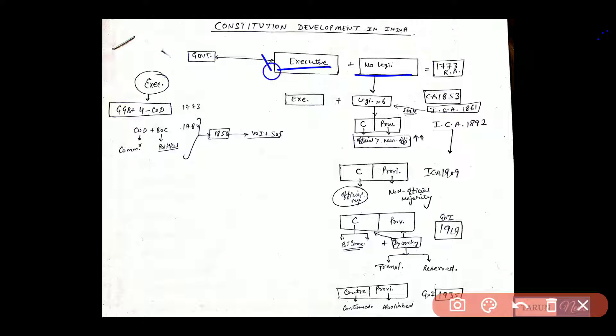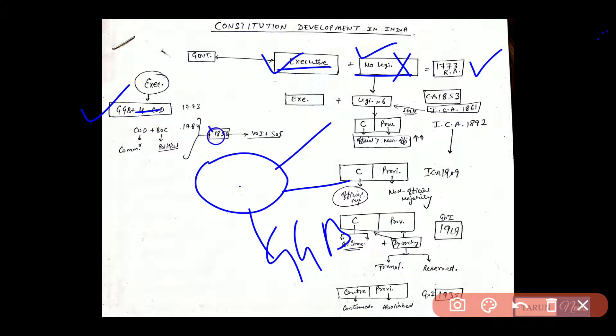The government has two organs: one is the executive and one is the legislature. But when our first Regulating Act was 1773, it was not the legislature, it was just the executive. And who was the executive? One was the Governor General of Bengal, which was Warren Hastings, and four Court of Directors. So these five men were sitting here. One is saying that I am supreme, that I am supreme, that I am supreme.